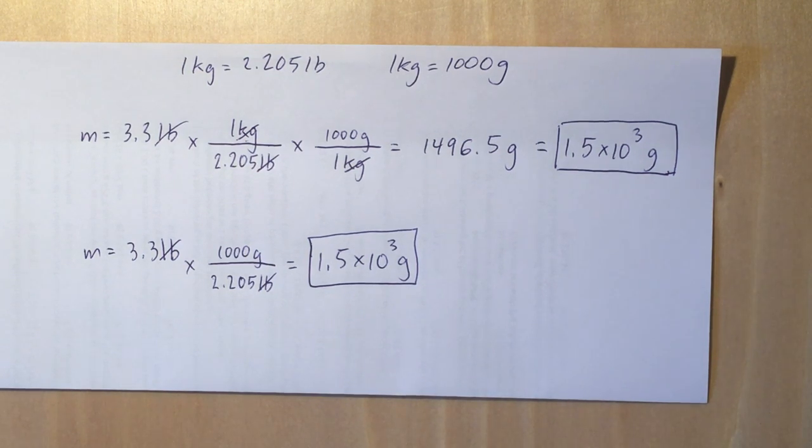So just on the top I do it the kind of way we've been showing it, with the pounds being canceled first, giving us kilograms, and then we cancel the kilograms with our second conversion, giving us grams.